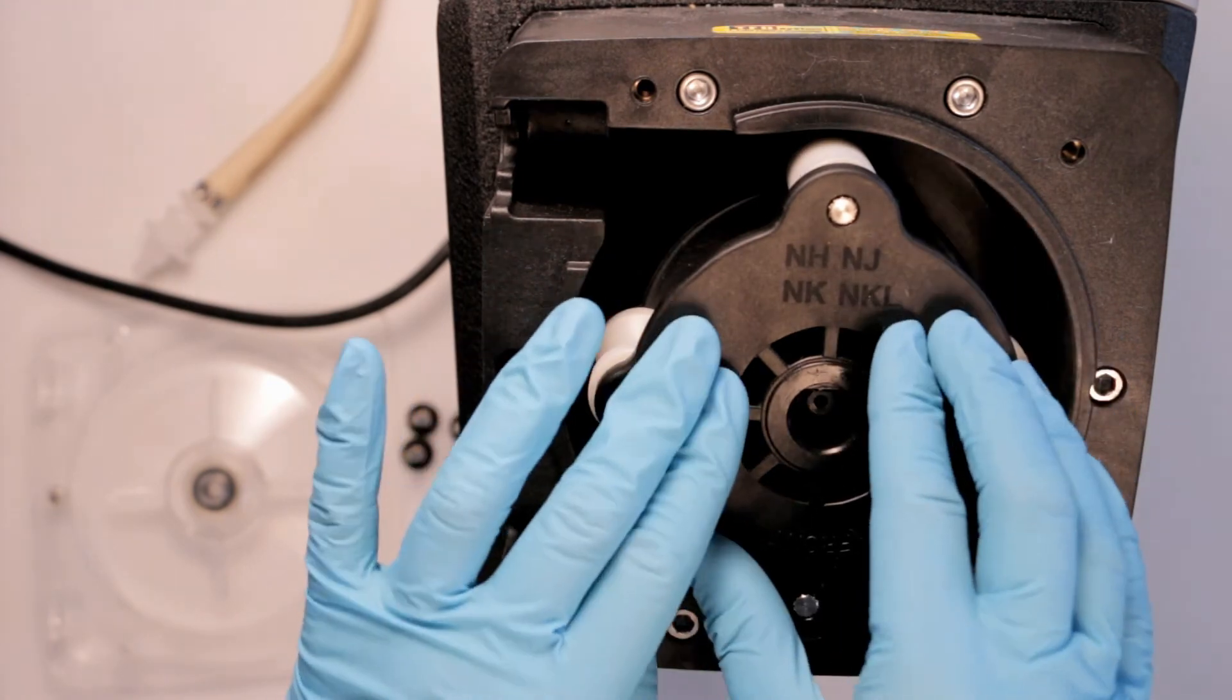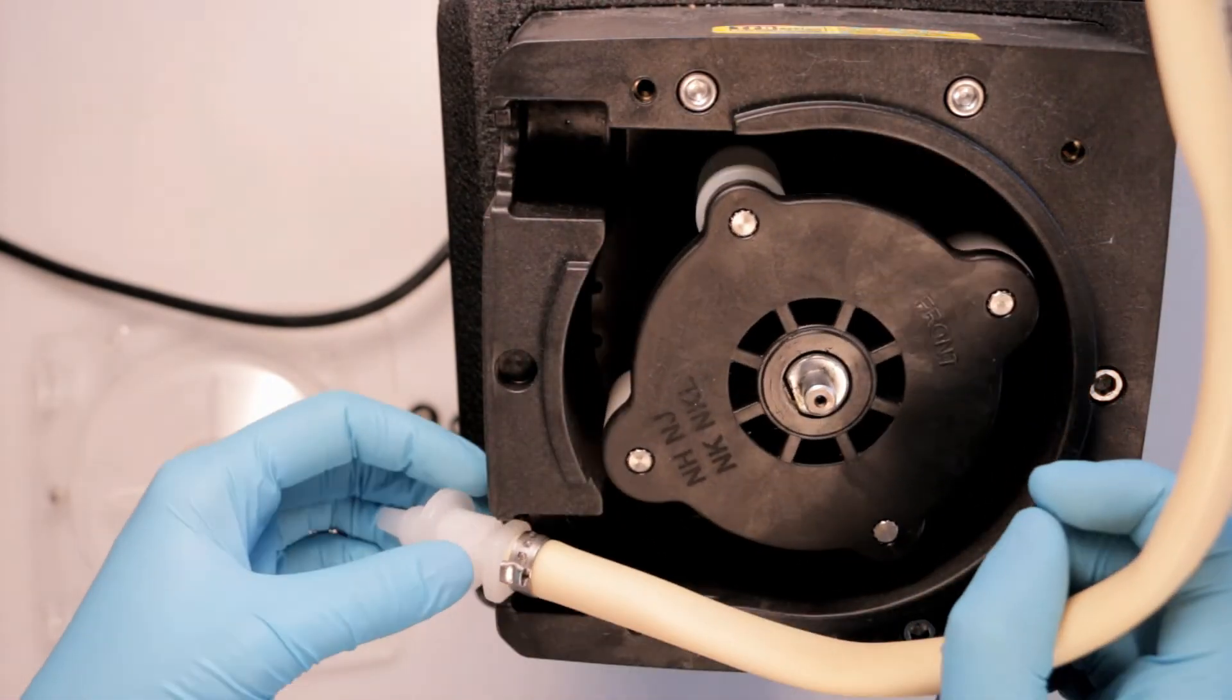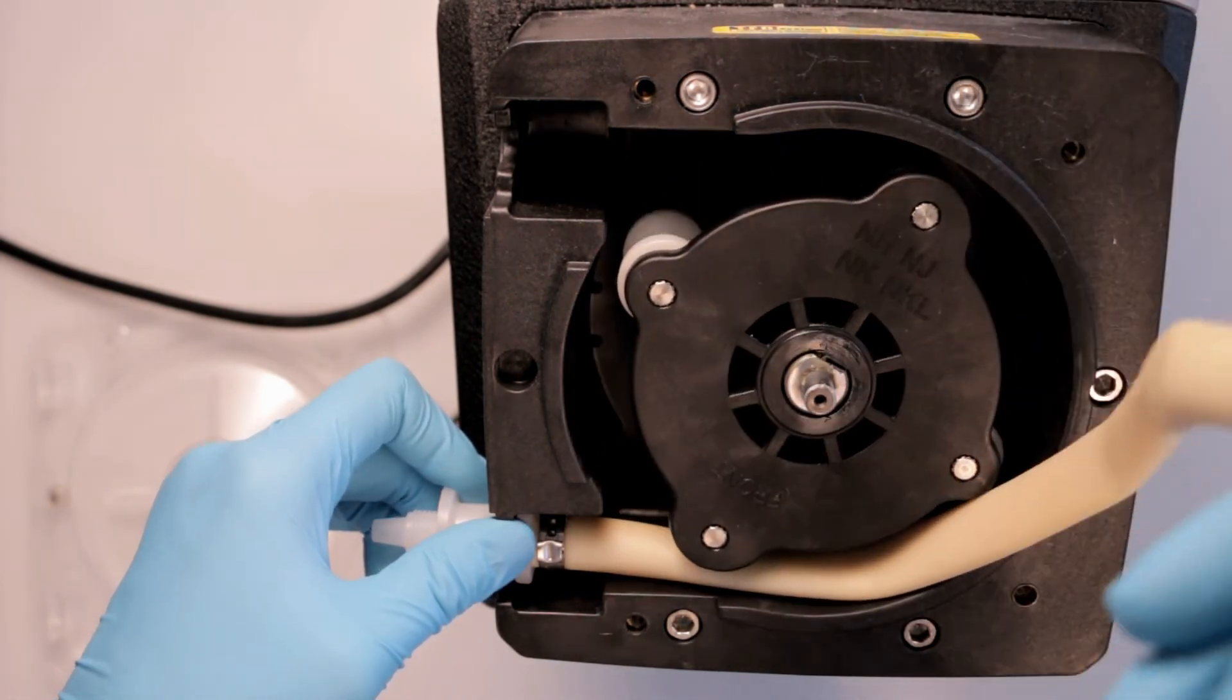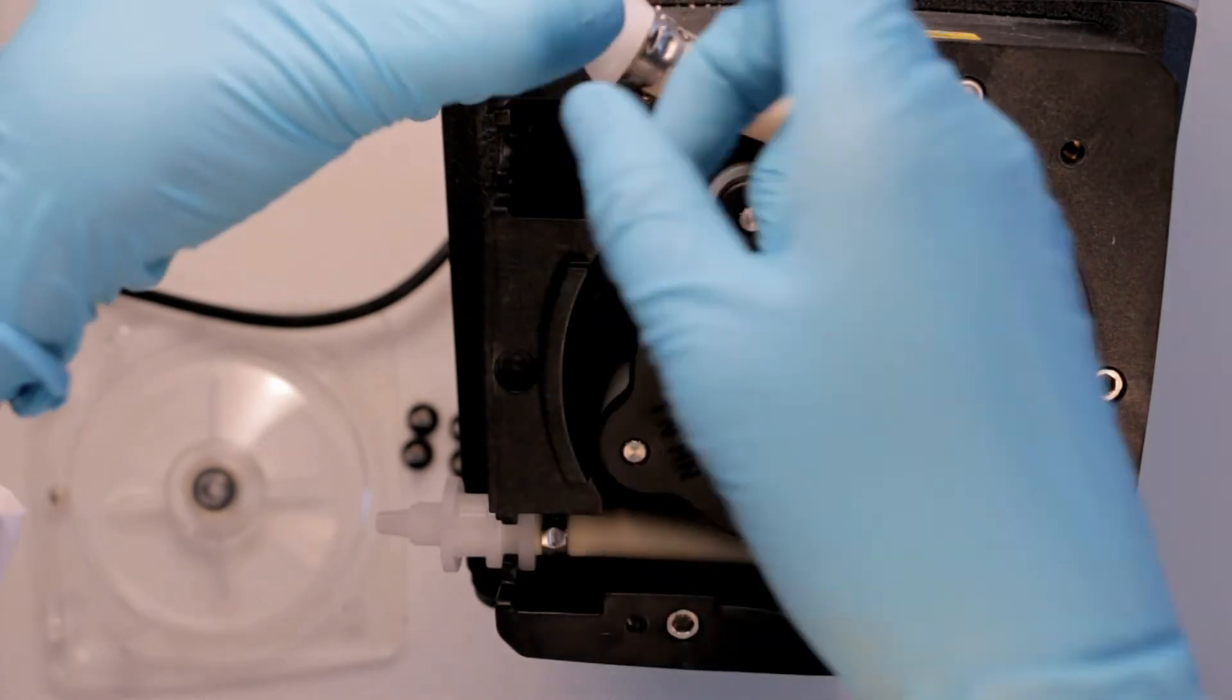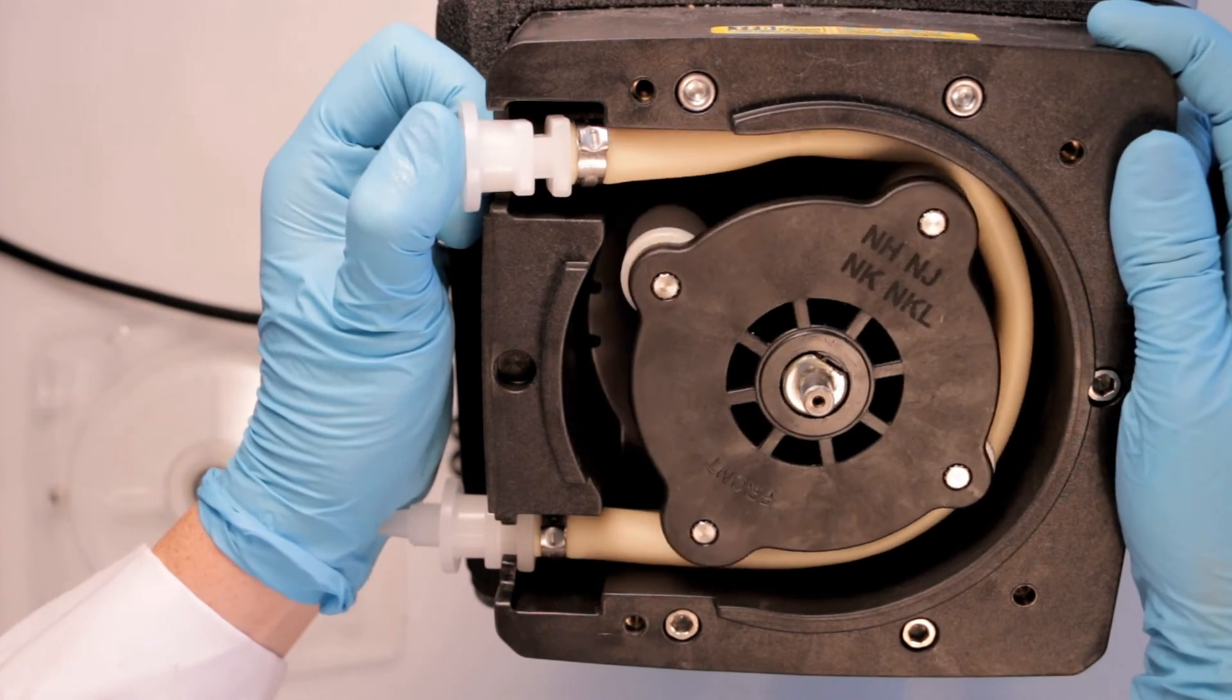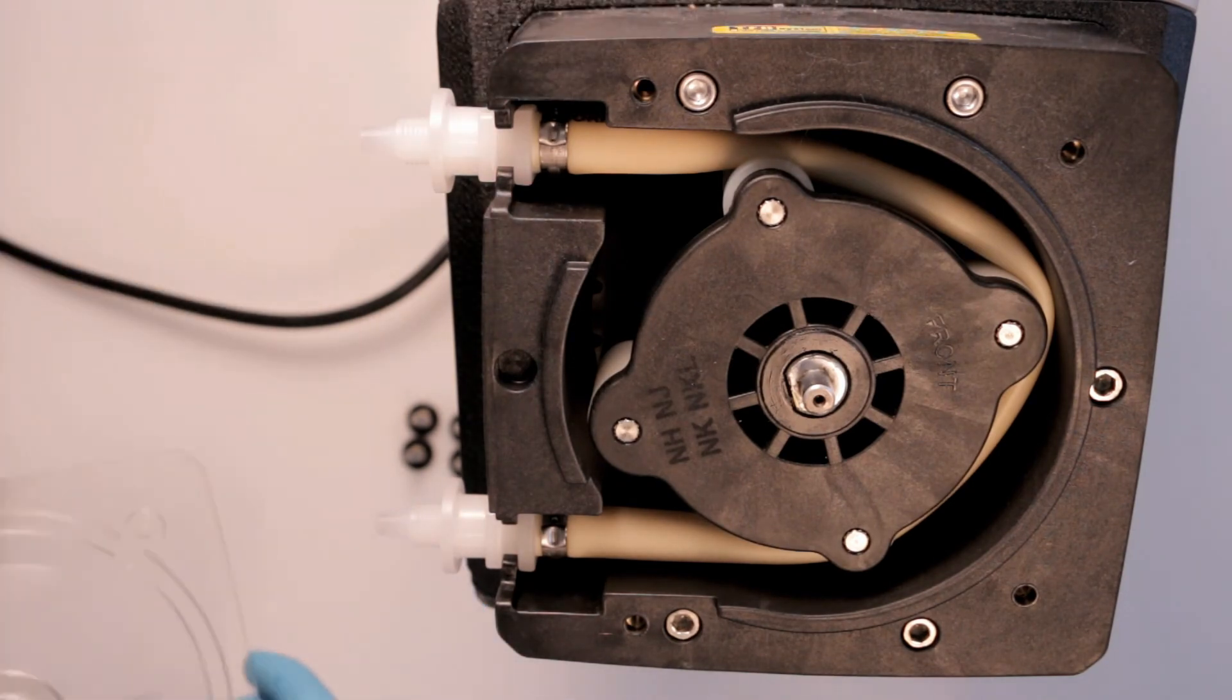Time to reassemble. Place your newly cleaned and oiled roller assembly onto the shaft. After pressing start, insert a new tube assembly. Now, replace the cover.